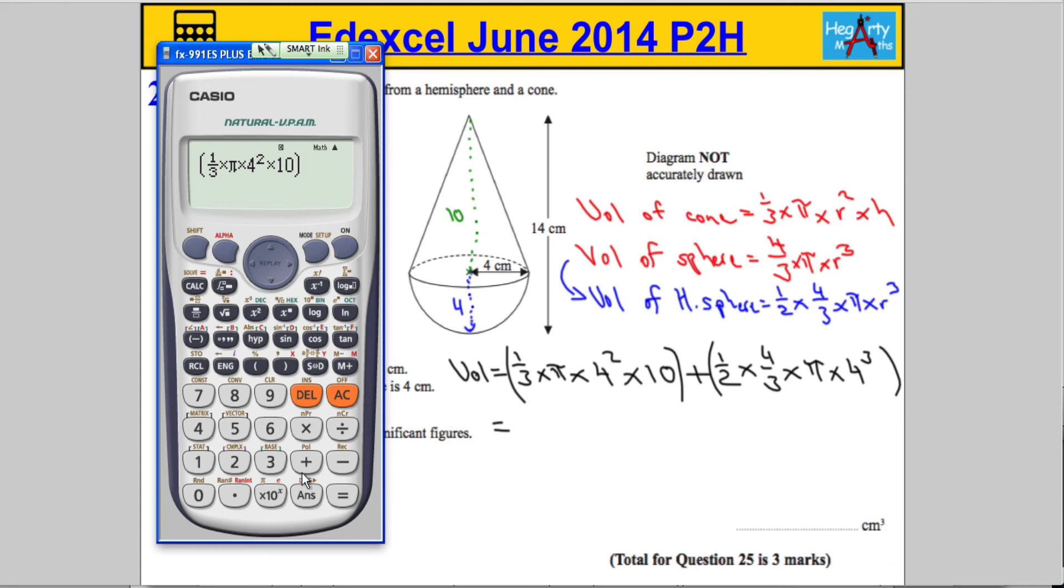I'm going to let the calculator do all of the work here. I'm going to add to that half times, I need another fraction, 4 over 3 times pi again, times 4 cubed this time. And then we're just going to close off that bracket and hit equals. We get 96 pi.